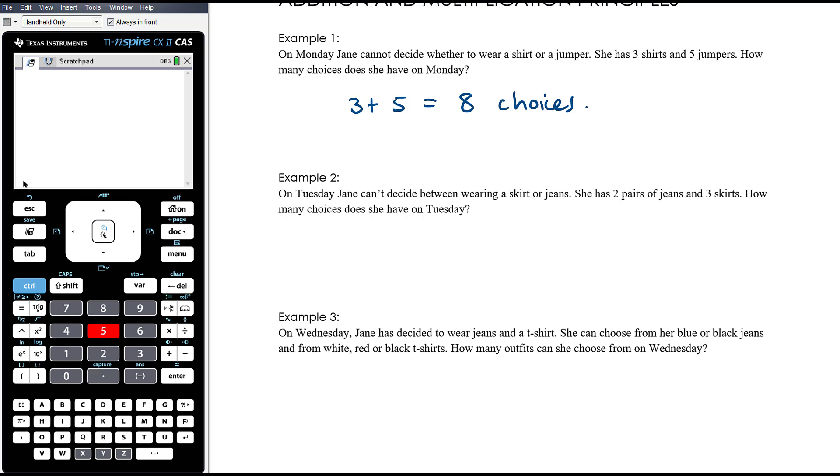On Tuesday Jane can't decide between wearing a skirt or jeans. She has two pairs of jeans and three skirts. How many choices does she have on Tuesday? She's either going to wear one of the two pairs of jeans or one of the three skirts, which means she's got five choices for her bottom half in total on Tuesday. She's not going to wear a combination of jeans and skirts—she's wearing a skirt or jeans, which means we can add together the number of jeans and the number of skirts to work out the total number of choices. That's the key.